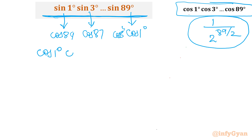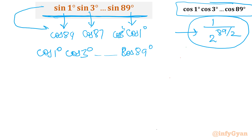Now the same question but with sine terms: sin 1° × sin 3° up to sin 89°. No need to recalculate — just using the complementary property, convert each sine into cosine, and the answer will be the same: 1 / 2^(89/2).